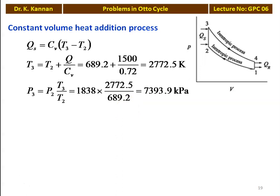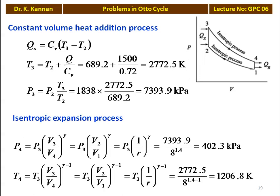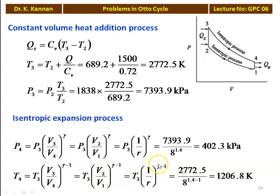For isentropic expansion 3 to 4: P4 equals P3 × (V3/V4)^gamma equals P3 × (V2/V1)^gamma equals P3 × (1/R)^gamma. Substituting 7393.9 / 8^1.4 equals 402.3 kPa. Temperature T4 equals T3 × (1/R)^(gamma-1) equals 2772.5 / 8^0.4 equals 1206.8 Kelvin. Air standard efficiency eta equals 1 - 1/R^(gamma-1) equals 1 - 1/8^0.4 equals 0.5647, which is 56.47 percent.